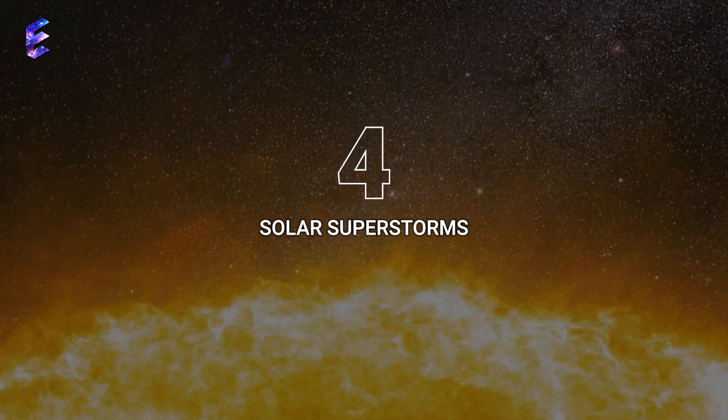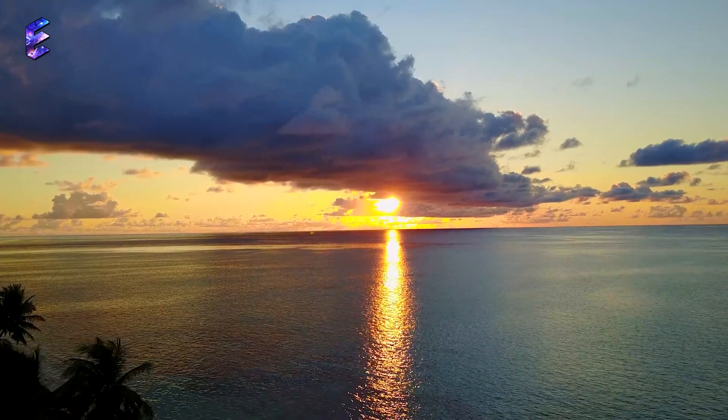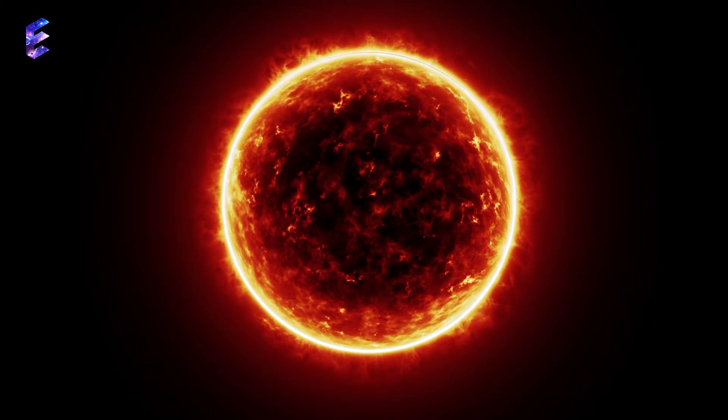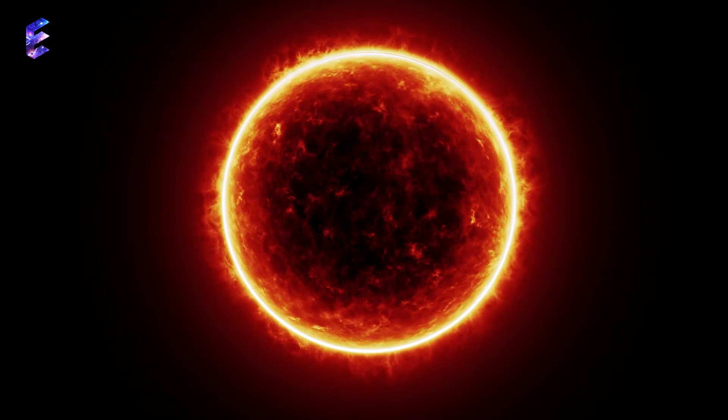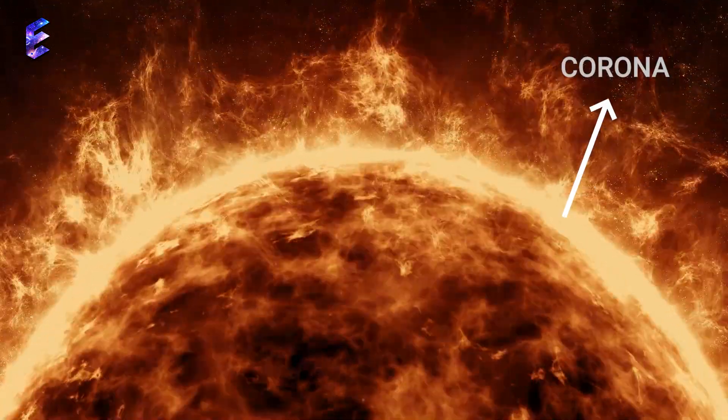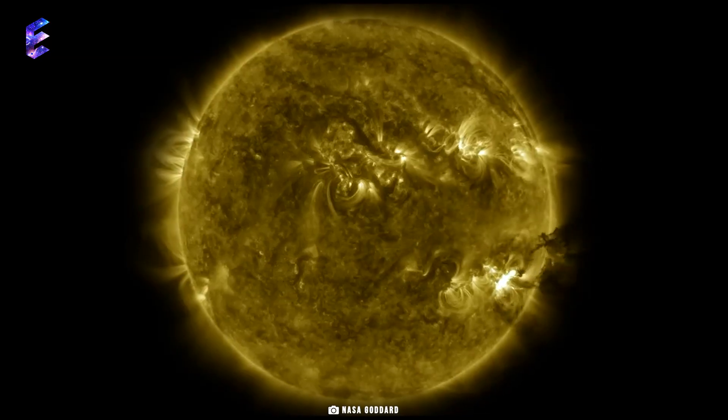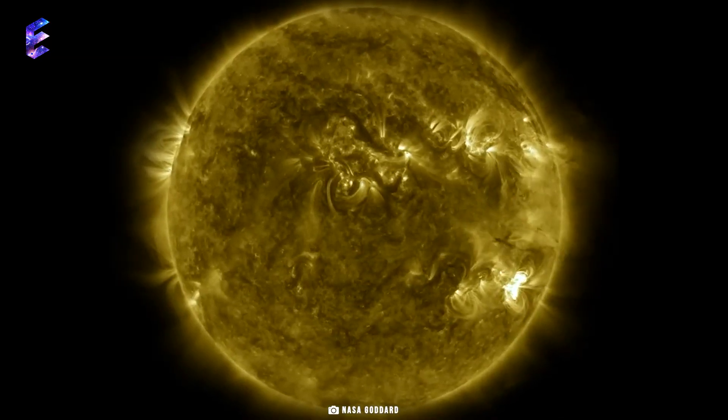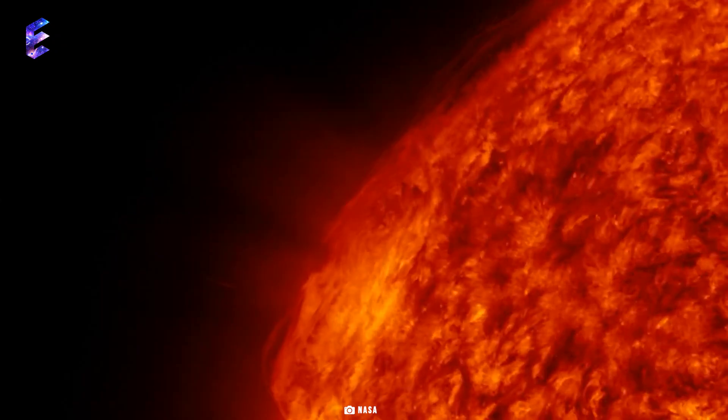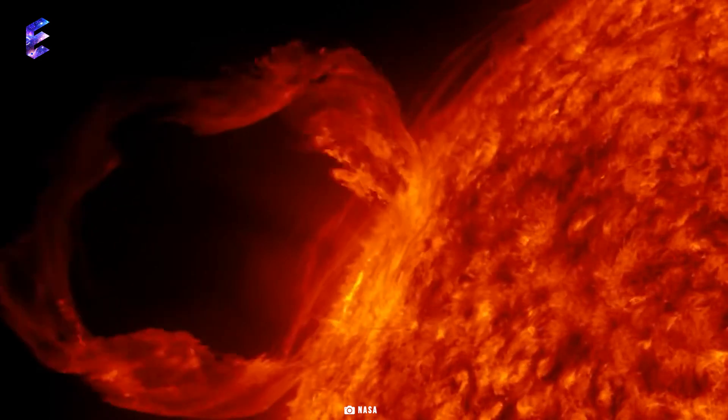Number 4, Solar Superstorms. Our Sun has provided us with warmth and light for years, but it can also sometimes dawn a more fierce look and unleash its terror. The outermost layer of the atmosphere of the Sun is called the corona. When the Sun decides to release the magnetic energy tangled in the form of magnetic knots, coronal mass ejections or CMEs result, which are huge bubbles of coronal plasma or electrified gas ejected by the Sun.